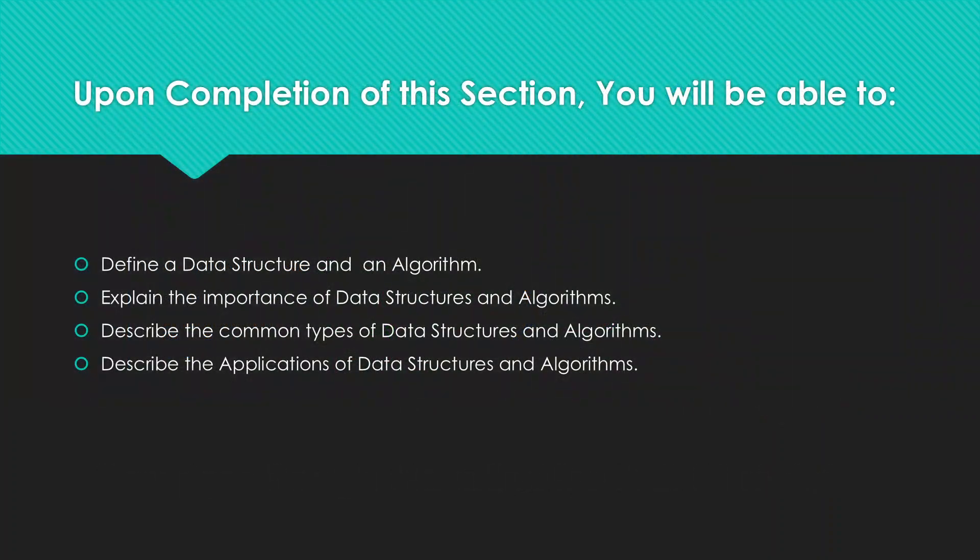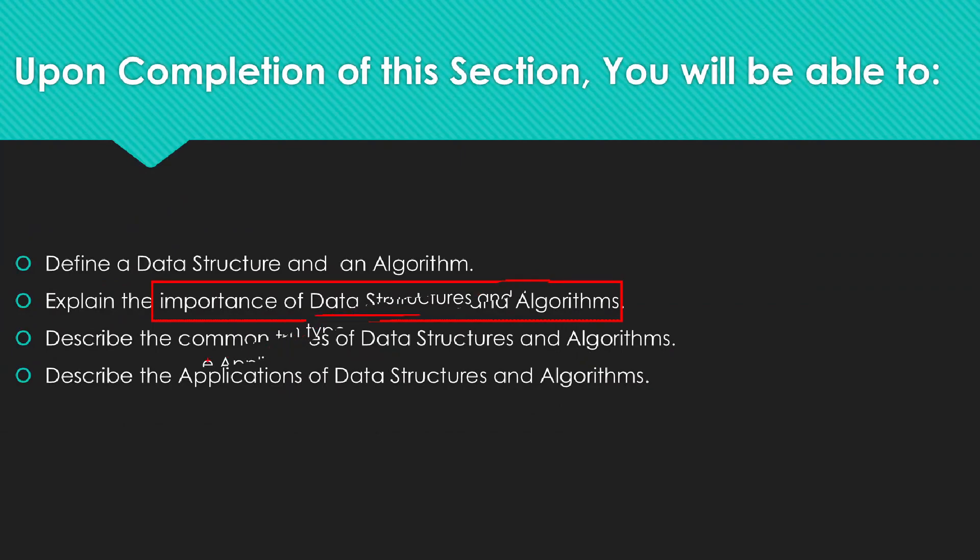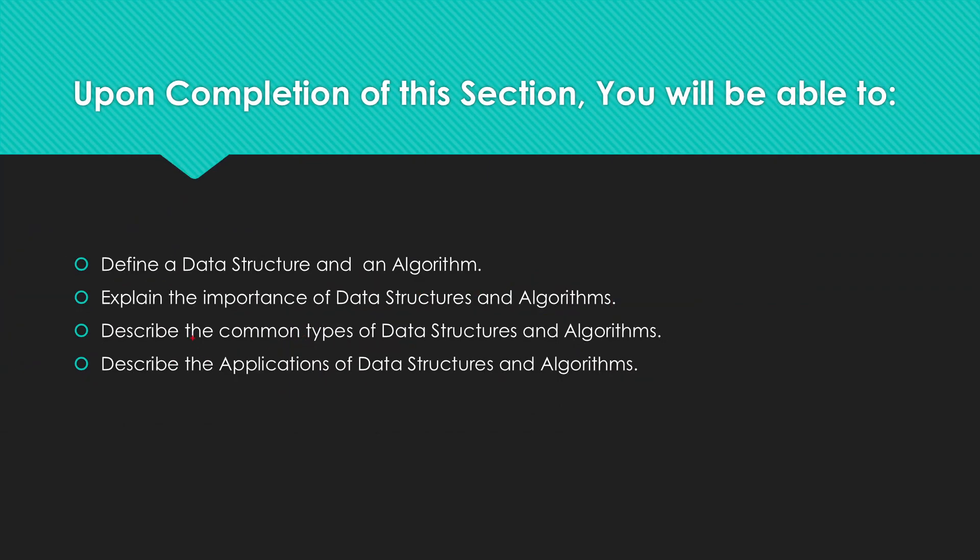Other than that, we should understand what a data structure is and what an algorithm is. We should also be able to understand the importance of data structures and algorithms and how especially big tech companies use them. We should also be able to understand the common types of data structures and also the common types of algorithms. Lastly, we should be able to look at a few examples of how it is used in the industry.